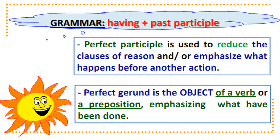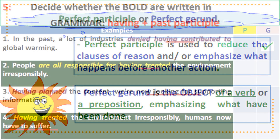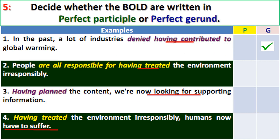Perfect participle is used to reduce the clauses of reason and/or emphasize what happens before another action. Perfect gerund is the object of a verb or a preposition. Decide whether the bold forms are perfect participle or perfect gerund.